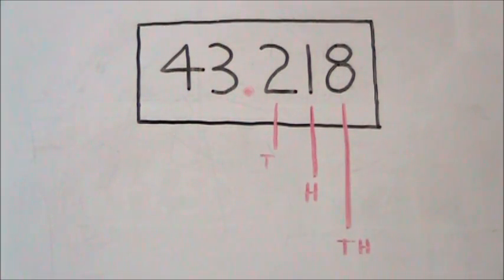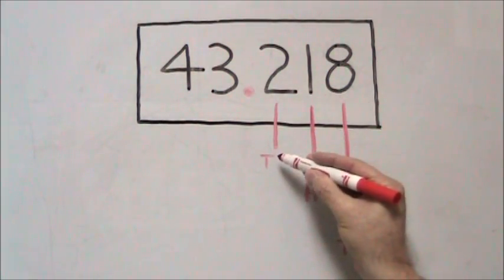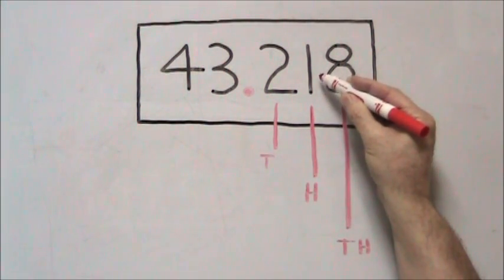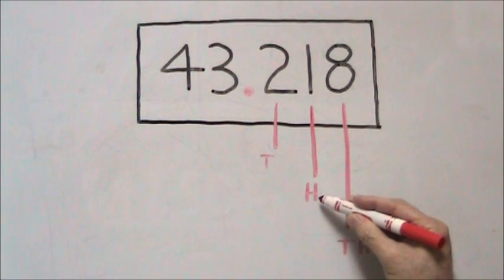The first number to the right of the decimal, the 2, is in the tenths place. The next one, the 1, is in the hundredths place.